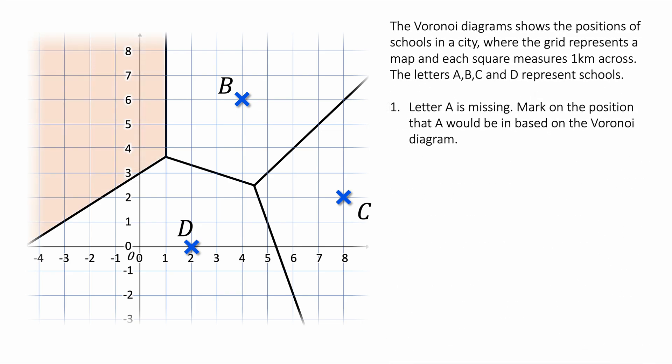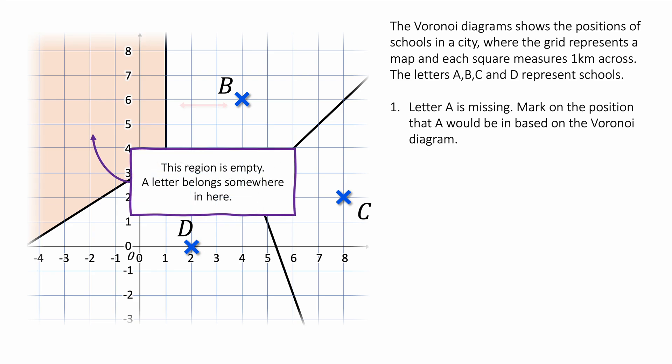Question one says letter A is missing. Mark on the position that A would be in based on the Voronoi diagram. I can see my Voronoi diagram on the left and I think A is going to be in this orange region because that's the only region without a letter. The distance from B to the line and then A to the line is going to be equal because that line represents the perpendicular bisector. It's going to be perfectly balanced between A and B. A is going to be there. That is the answer to question one.